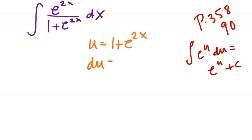Then du is equal to, well, the derivative of 1 is 0. The derivative of e to the 2x. Well, the derivative of e to the u is e to the u times u prime. So that's e to the 2x. u prime is 2 dx.